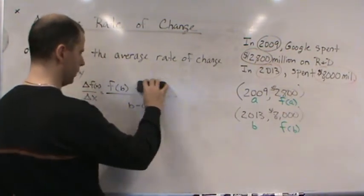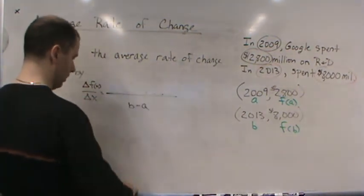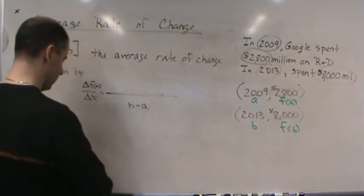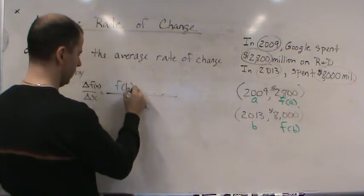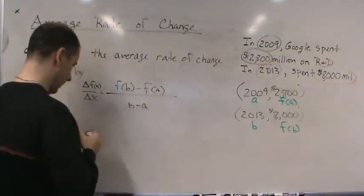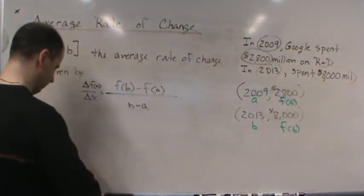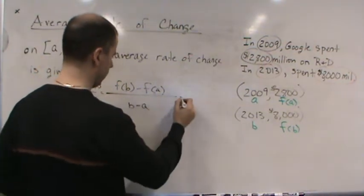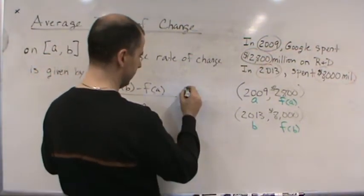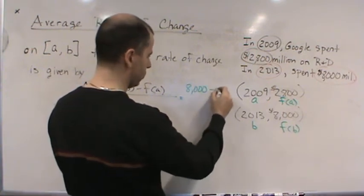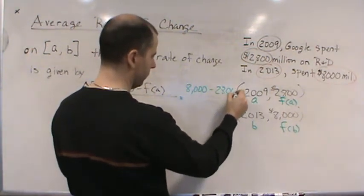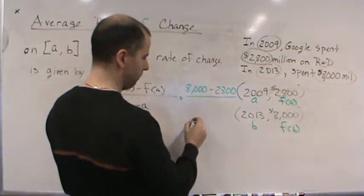So f(b) minus f(a) over b minus a. This equals: f(b) is 8000, so 8000 minus 2800, divided by 2013 minus 2009.